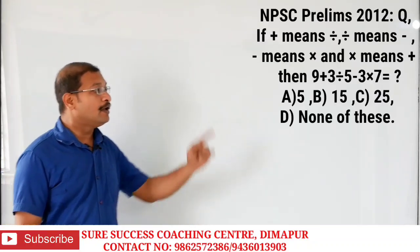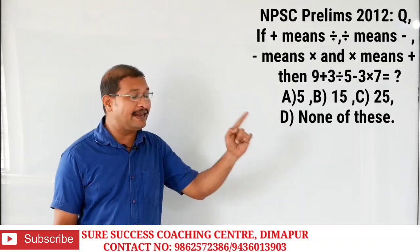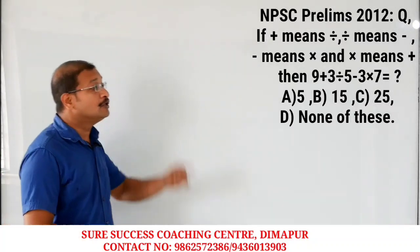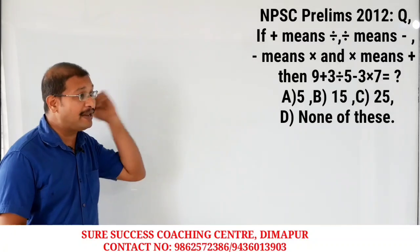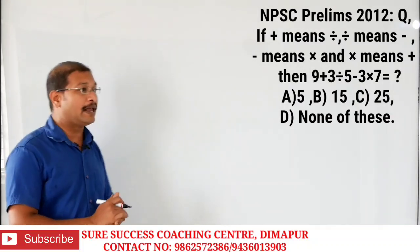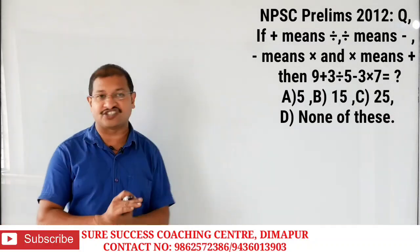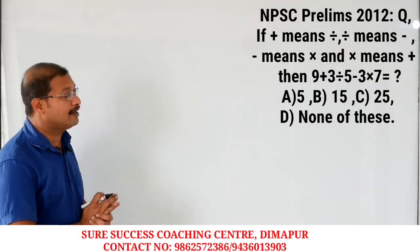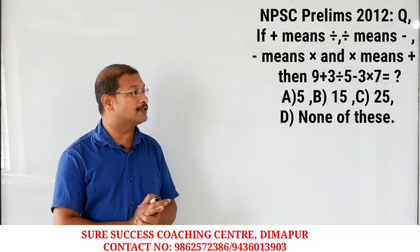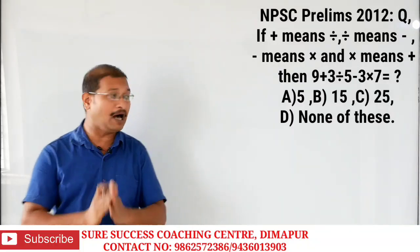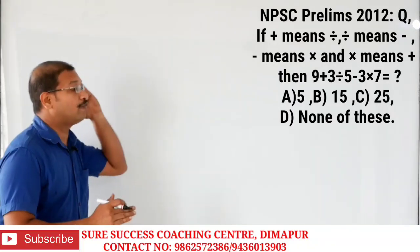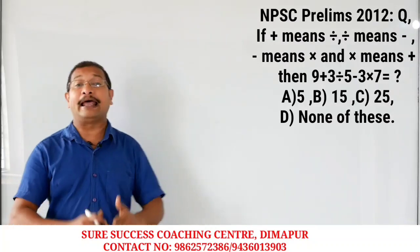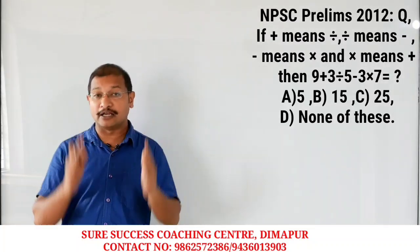First question: if plus means division, division means subtraction, subtraction means multiplication, and multiplication means addition, then 9 plus 3 divided by 5 minus 3 into 7 equals question mark. Option A: 5, Option B: 15, Option C: 25, Option D: none of these.